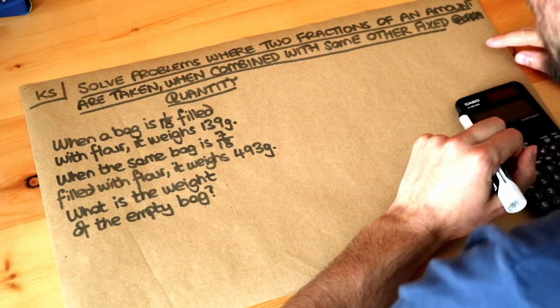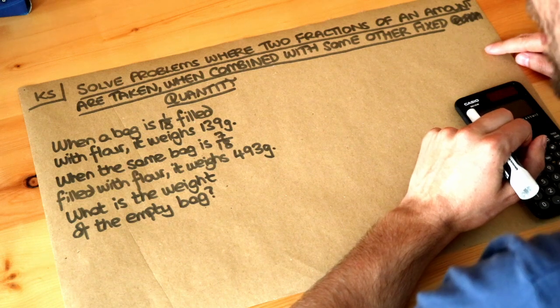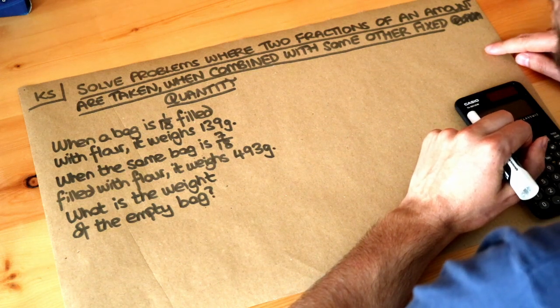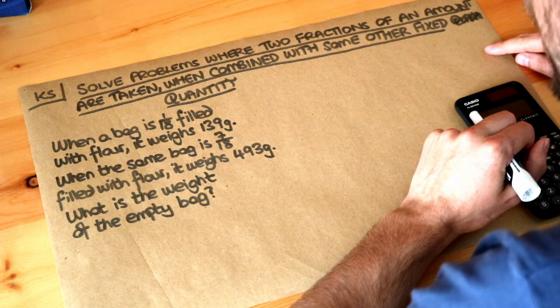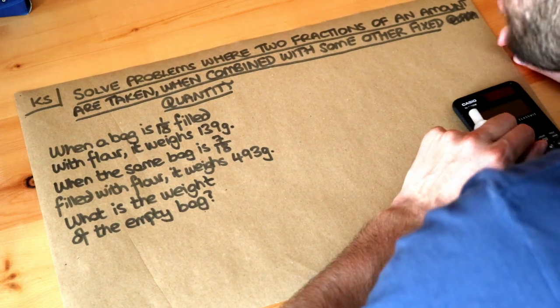When a bag is 1/18th filled with flour it weighs 139 grams. When the same bag is 7/18ths filled with flour it weighs 493 grams. What is the weight of the empty bag?